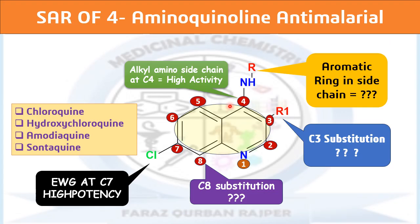Now let's summarize the lecture. The 4-amino-quinoline anti-malarial drug SAR is based on: at the 4th position, the alkylamino side chain is essential for high potent anti-malarial activity — substituting with an aromatic ring gives amodiaquine. At the 3rd position, substitution with methyl produces santaquine. The 8th position must be left unsubstituted, as its substitution leads to loss of activity. At the 7th position, an electron withdrawing group such as chlorine is essential for anti-malarial activity; replacing it with a methyl group results in complete loss of activity.